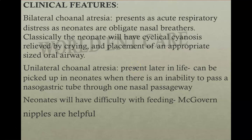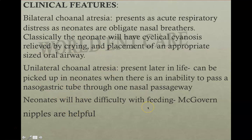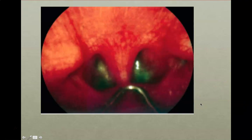Placement of an appropriate oral airway is important. Unilateral choanal atresia presents later in life because the child can breathe through one side of the nostril. It can be picked up in neonates when there is inability to pass a nasogastric tube through one nasal passage. Apart from breathing difficulty, neonates will also have difficulty in feeding, for which artificial nipples — called McGovern nipples — may be used.